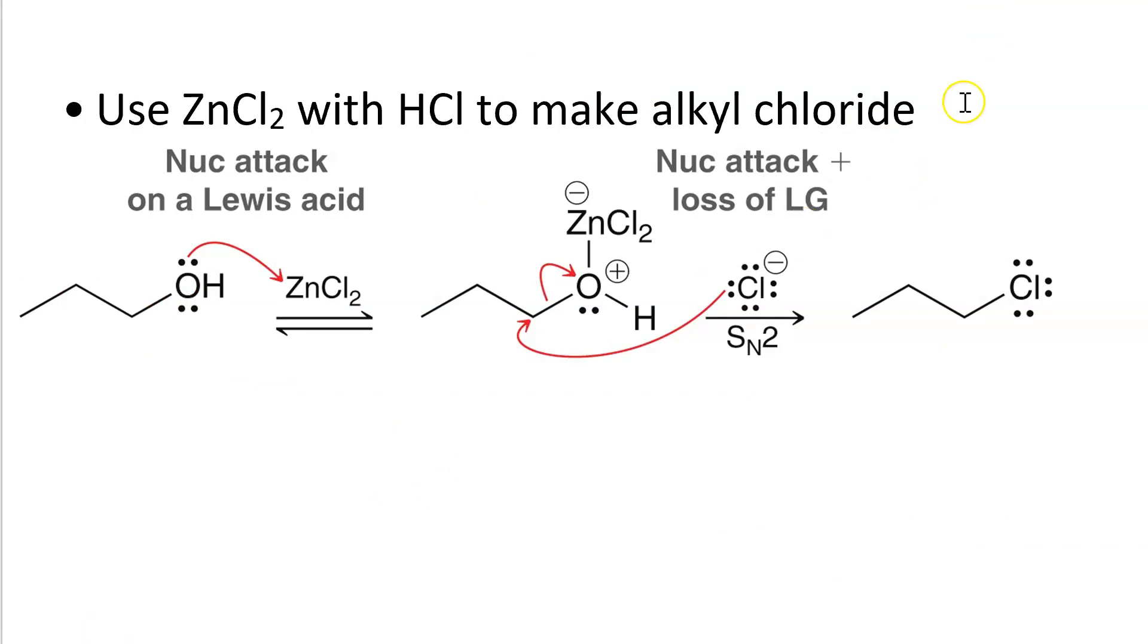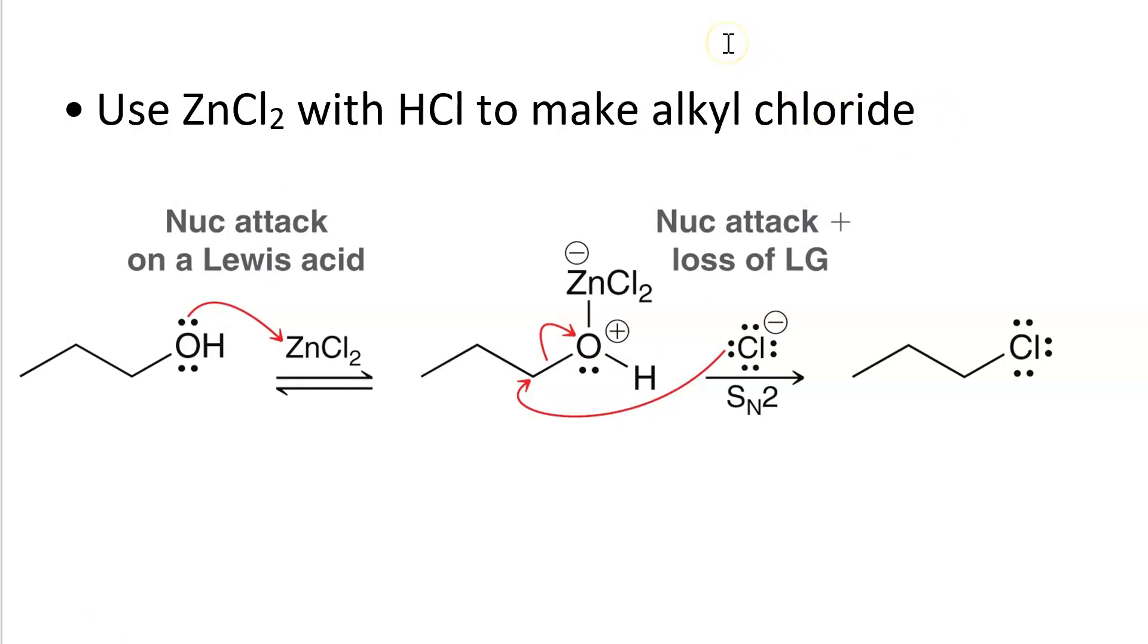If we want to make an alkyl chloride, we don't necessarily have to use HCl. We can also use thionyl chloride. So there will be nucleophilic attack by the alcohol on the zinc to make this zwitterion - the zinc is now negatively charged and the oxygen is positively charged. This is a good leaving group. And chloride ion that is present in solution because of the zinc chloride then does nucleophilic attack. This is SN2. And so we get our alkyl chloride. And we should also have this zinc chloride hydroxide anion from the leaving group.